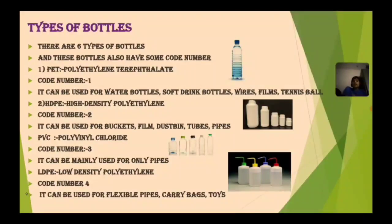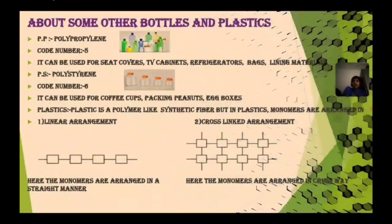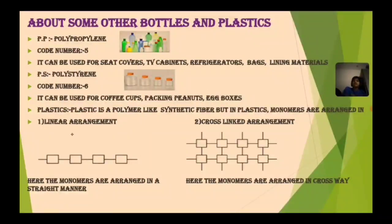Fourth is LDPE — low density polyethylene, code number 4 — used for flexible pipes, carry bags, and toys. Fifth is PP — polypropylene, code number 5 — used for seat covers, TV cabinets, refrigerators, bags, and lining materials. Sixth is PS — polystyrene, code number 6 — used for coffee cups, packing peanuts, and egg boxes.